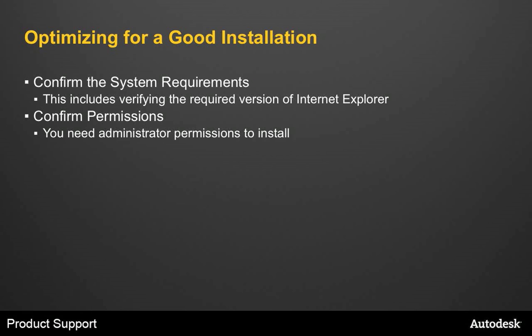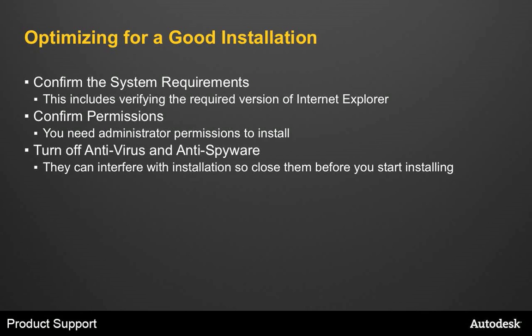Next, you should confirm permissions. To install AutoCAD, you must have administrator permissions. If you don't have administrative privileges, you can't install anything to the workstation, and sometimes Windows will show you an error asking you to log in as an admin. Turn off any anti-virus or anti-spyware programs that are running. Many of these programs can cause problems with installation. Anti-virus especially does real-time checks of files being written and read from the hard drive, and they tend to block administrative privileges and can cause the installation to fail. So close them before you start installing.